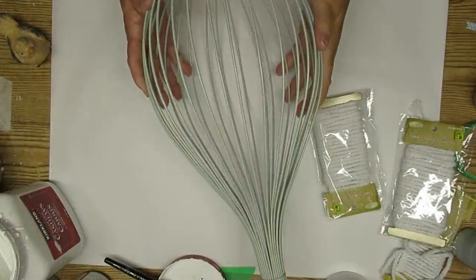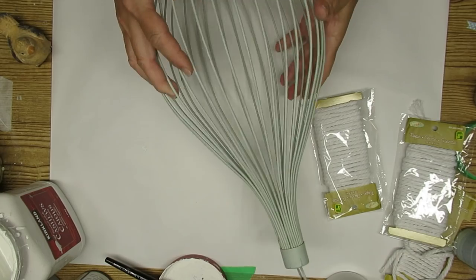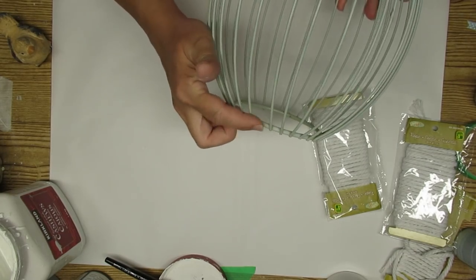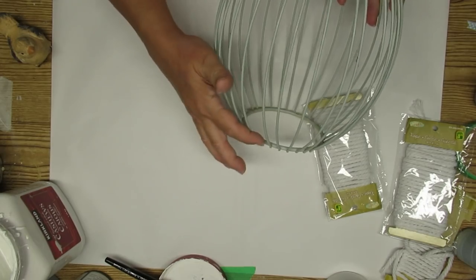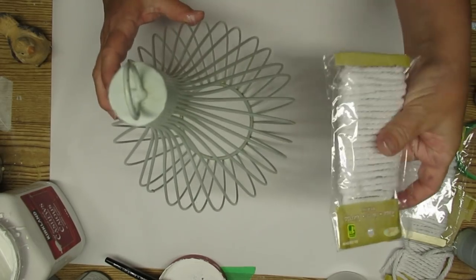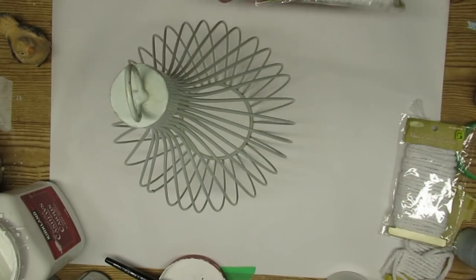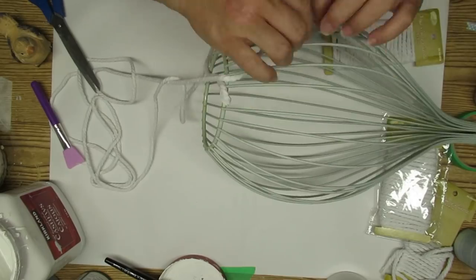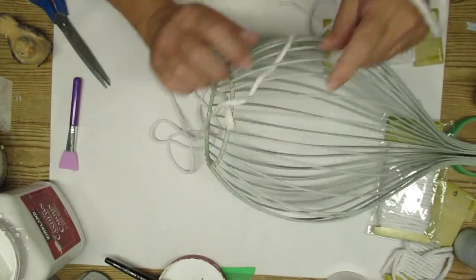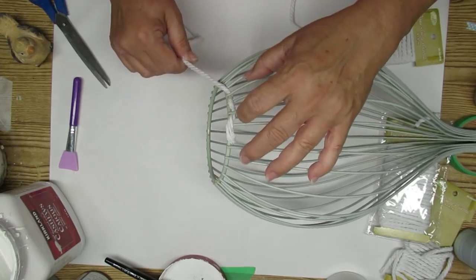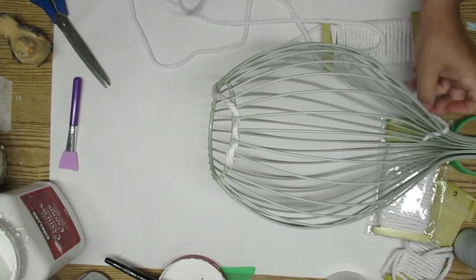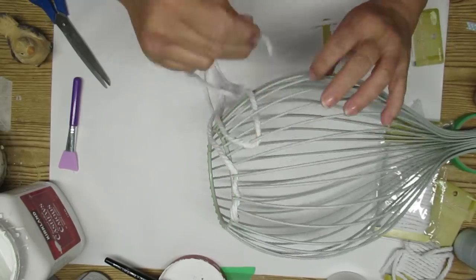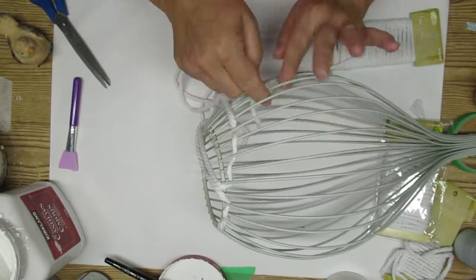My second project for you today is using this thrifted candle holder, I think. I don't really know what it is, but I think it's meant for a candle, and it's wire, and it's this beautiful green color. I love the color, but it is missing one of the pegs. So I want to camouflage that a little bit. I'm using some of this white cotton rope from Dollarama, and I'm going to start weaving it in and out at the bottom, and go up about four or five rows, just to give this a little bit more of an interesting texture.